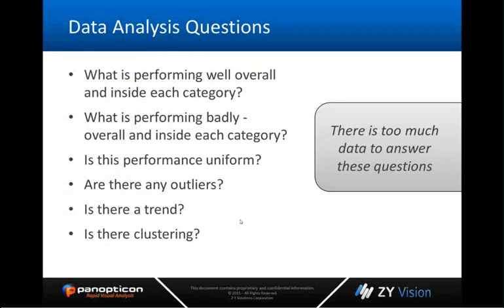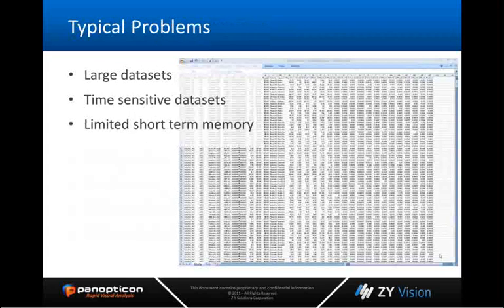In typical data analysis you have a lot of questions: What are the outliers inside or outside a particular category? What type of performance are we getting? Are there any trends or clustering? When you look at a data set, these are very hard questions to answer by weeding through volumes and volumes of data. For instance, you have an Excel spreadsheet with tons of columns and numerous rows — you just can't glean any trends or outliers from the numbers themselves.